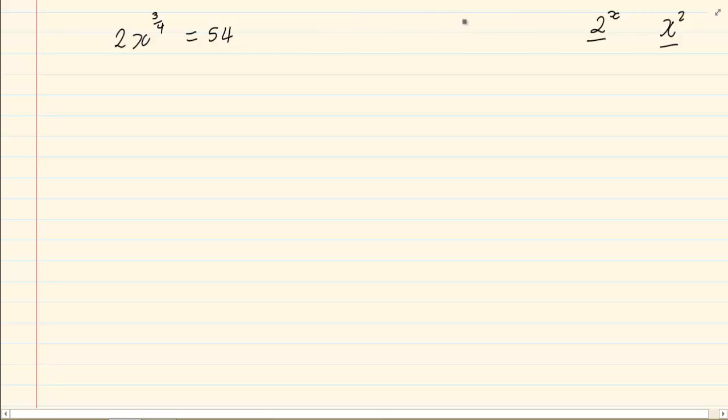Now, the first step which you had learned in solve for x is to get the unknown alone. In this case, we are going to divide by 2, and what we do on one side, you have to do to the other side. So we have x to the power of 3/4 is equal to 27.